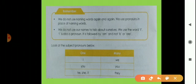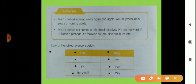Now look at the chart of subject pronouns. Here is one and many. The first subject pronoun is 'I,' and in the many column, 'we.' Then 'you,' and in the many section, 'you.' And he, she, it, and in the column of many, 'they.' So use these subject pronouns in your sentences.